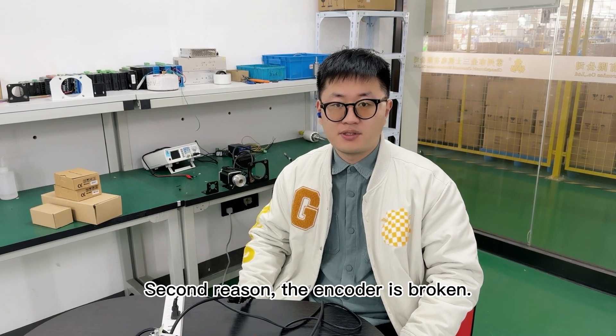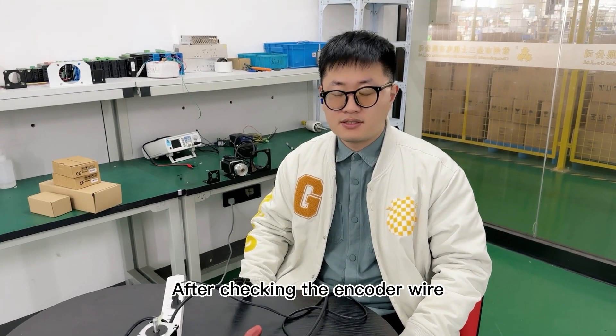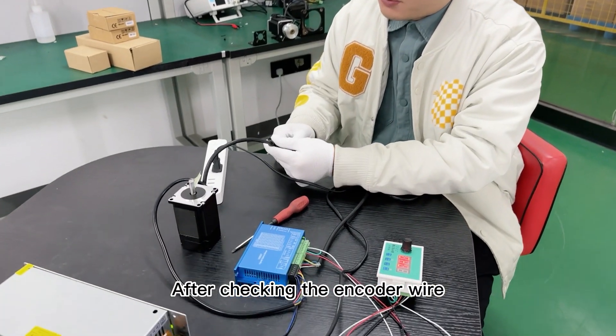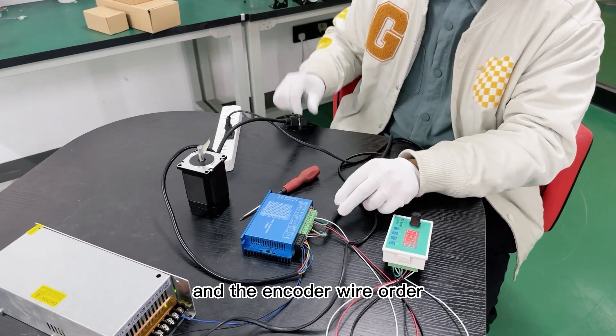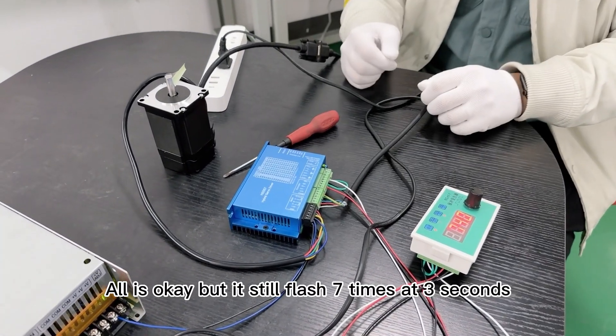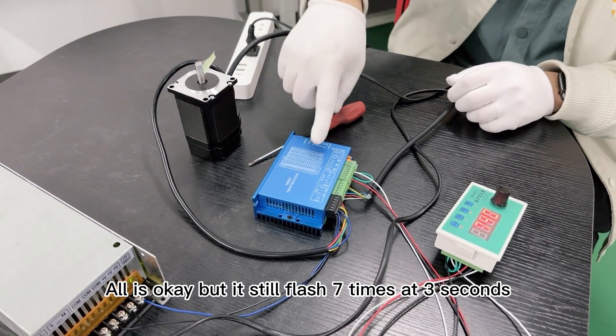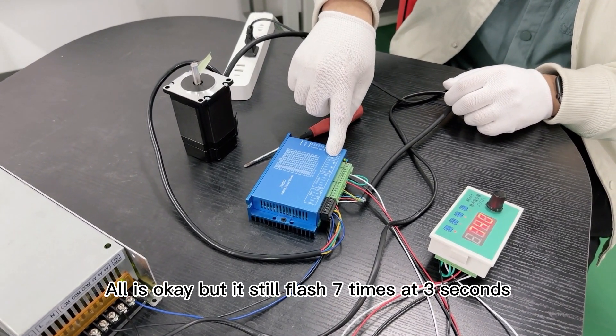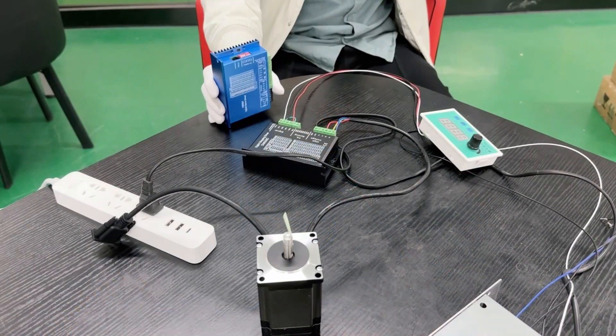Second reason: the encoder is broken. After checking the encoder wire and the encoder wire order, all is okay, but it still flashes seven times within three seconds.